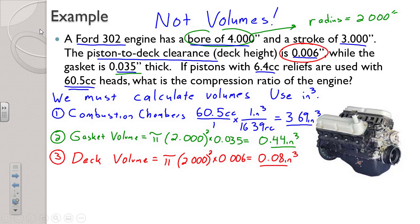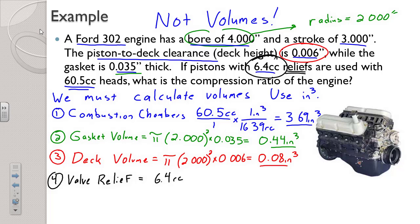Going back to our engine, we are told that our pistons have 6.4 cc valve reliefs. Therefore our volume number four — piston relief — is 6.4 cc's. But like our combustion chambers, we need to convert those units: divided by 16.39 cc's per cubic inch, and those are 0.39 cubic inches.